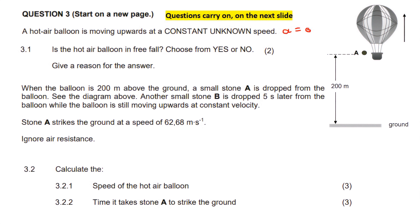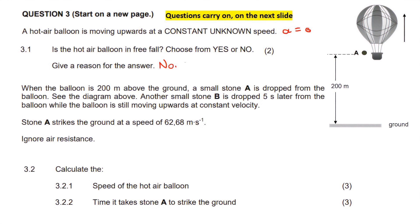An object is only under free fall if it is acting under the influence of gravity only. If this hot air balloon was only being acted upon by gravity, it would not remain at a constant speed. It would slow down, reach zero velocity, and then begin to fall. But we're told it's moving up at a constant speed, so there's clearly an applied force from the balloon's fire. Therefore the answer is no — gravity is not the only force acting on the hot air balloon.